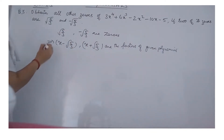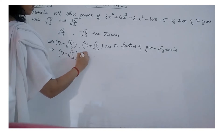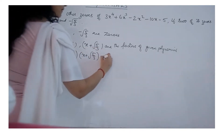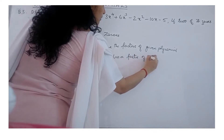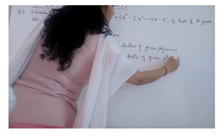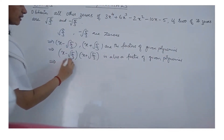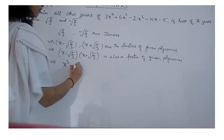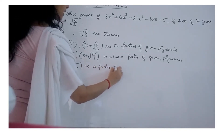Since these two are the factors, their product will also be a factor of the given polynomial. That is, (x - √(5/3)) × (x + √(5/3)) will also be a factor. Using the identity (a+b)(a-b) = a² - b², we get x² - 5/3 as a factor of the given polynomial.